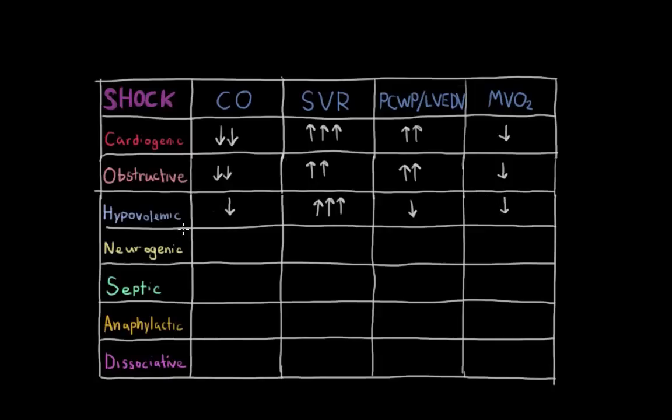Next, neurogenic shock causes impaired sympathetic response to the heart and the blood vessels. So you have very low blood pressure because both the heart and the blood vessels are getting low sympathetic tone. And of note, in neurogenic shock, you have bradycardia, low heart rate.